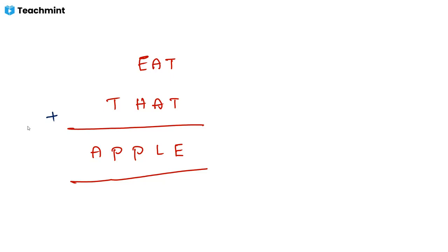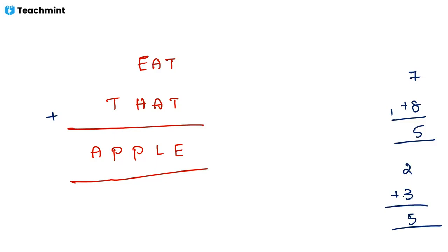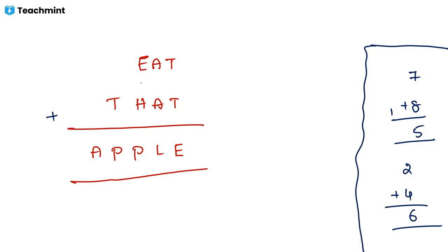First question: when adding any two single-digit numbers, what is the maximum carry you will get? If you take two single-digit numbers, the maximum carry is one or zero. For example, seven plus eight is fifteen — carry of one. Two plus three is five — no carry. Two plus four is six — no carry. So when you add two single-digit numbers, carry is maximum one or zero.